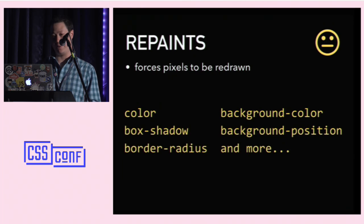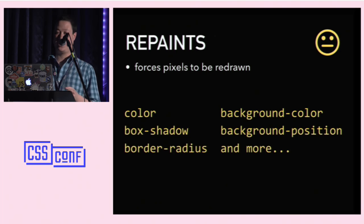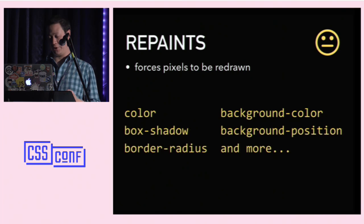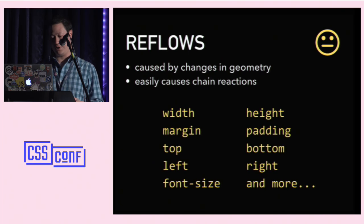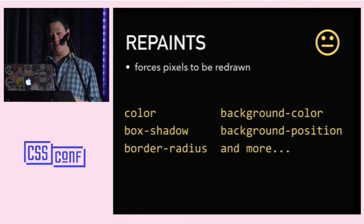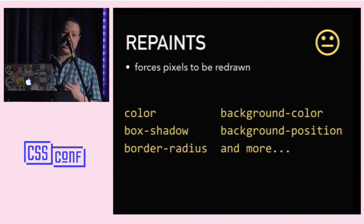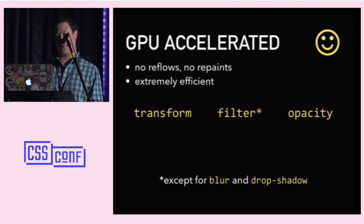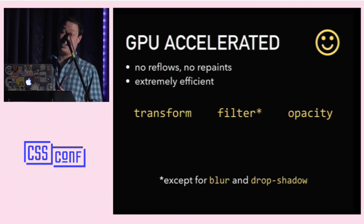The second category is CSS properties that, when animated, will cause repaints — whenever you are forcing your browser to redraw pixels for an element. The most likely culprits are color and background color. Repaints will not cause reflows, but reflows can often cause repaints — if you force a reflow and an element is moved, your browser may have to repaint it in a new location. The third category is great: these properties, when animated, cause no reflows and no repaints. In fact, these animations can be handled completely within the GPU thread, making them extremely efficient.